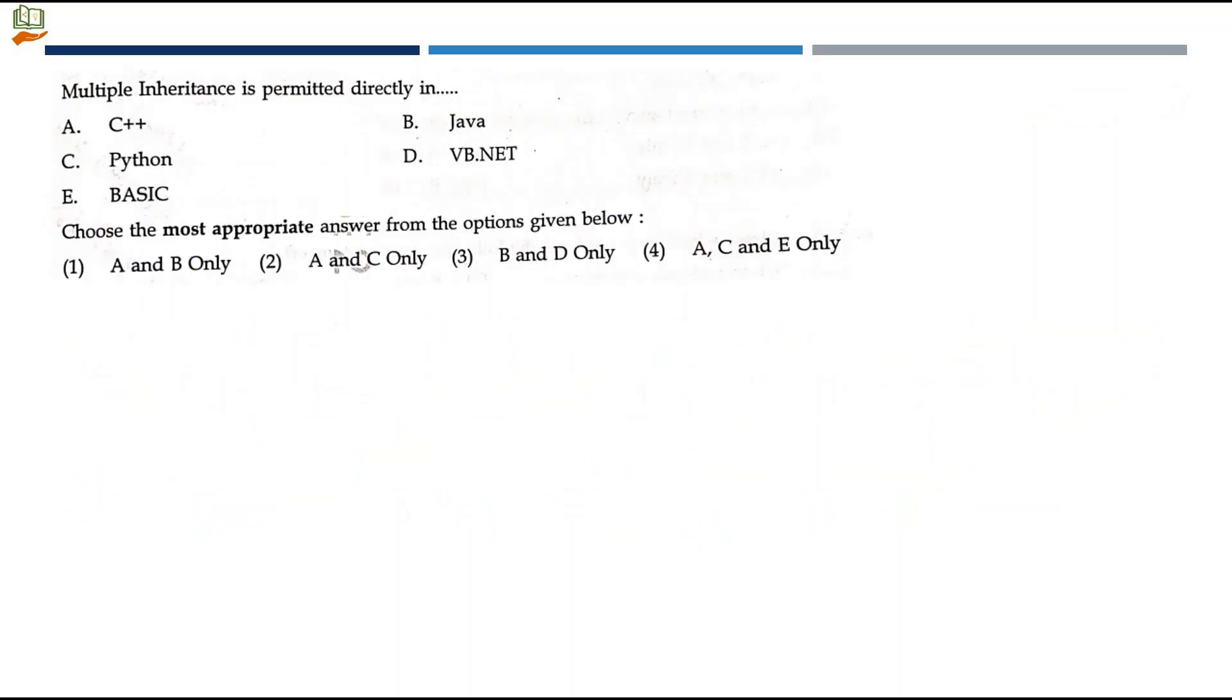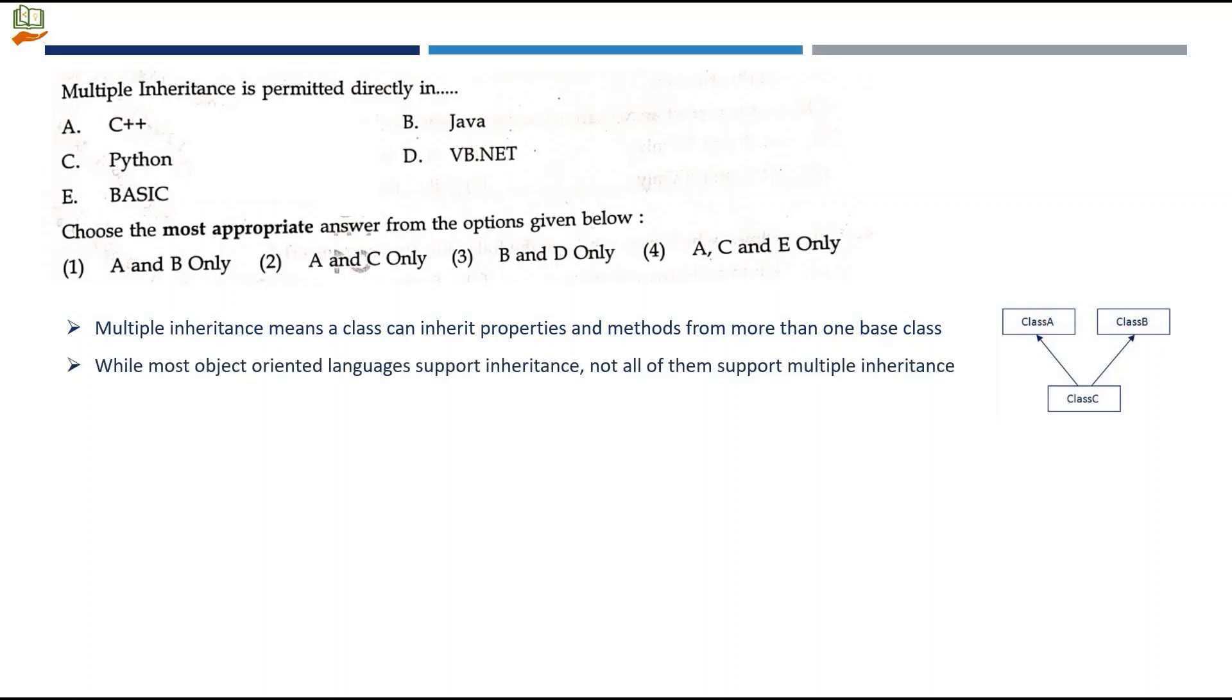Next question: multiple inheritance is permitted directly in. All languages may allow multiple inheritance, but some languages do not allow direct implementation. We have to find which languages directly permit multiple inheritance. Multiple inheritance is when a class can inherit properties and methods from more than one base class. Class C derives from two base classes, class A and class B. While most object-oriented languages support inheritance, not all support multiple inheritance. C++ allows multiple inheritance. Python supports all types of inheritance including multiple inheritance.